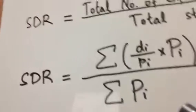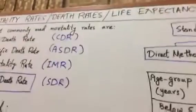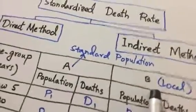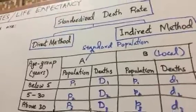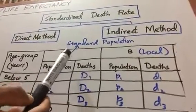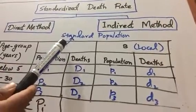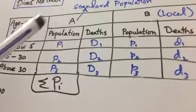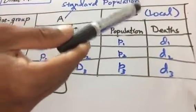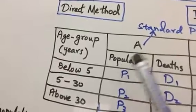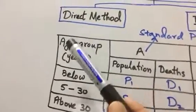So we have this given table for different towns A and B. We need to make one of the towns as standard. Let's suppose I make standard population from town A. I'm taking standard population from town A, so we can calculate death rates. First column is age group, and the given data is population and deaths in terms of age group in years.